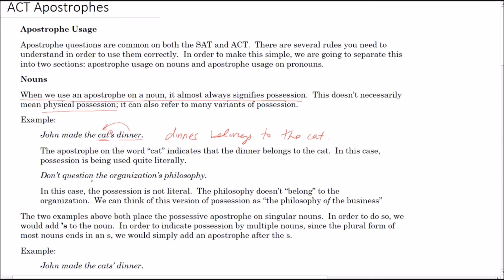In the next case: don't question the organization's philosophy. We have the organization and the philosophy, and the philosophy belongs to the organization. But in this case it's not literally a possession — the organization does not literally own a tangible item called a philosophy. It's just the philosophy of the organization, metaphorically speaking. So it does not have to be literal, but it does have to be one noun taking ownership of another noun.